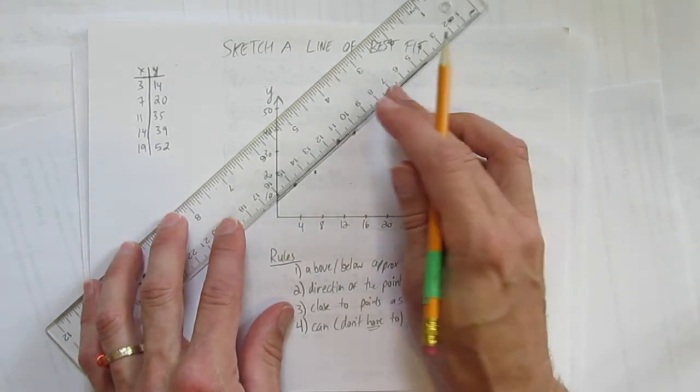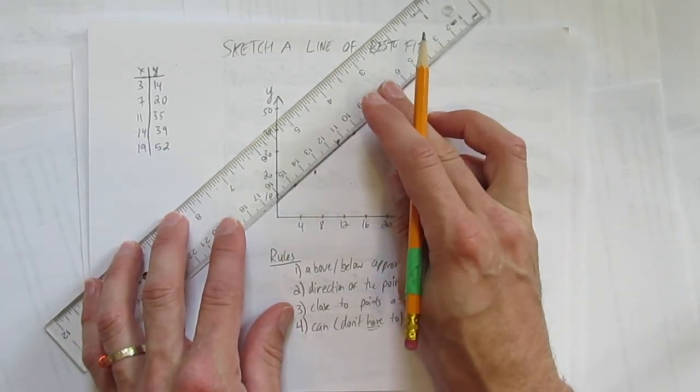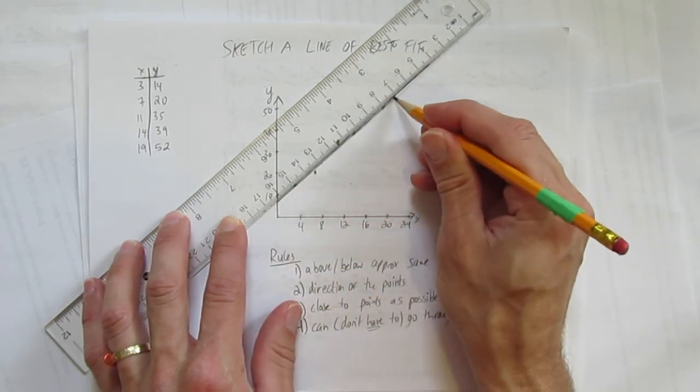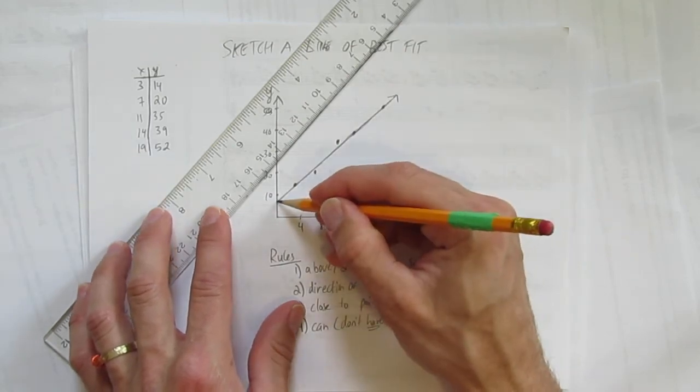So now that I feel like it's good, I'm going to shade it in a little better. Get my ruler back to where it was. Draw a nice solid line of best fit. And don't forget the arrow on the end.